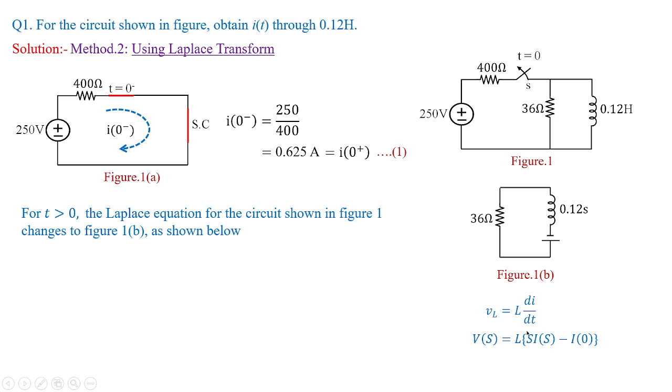We have Ldi/dt so it becomes LsI(s) minus the initial current stored. Here we have 0.625 amps so that you need to keep in mind. Overall, the voltage across inductor is based upon this formula, that is V(s) is equal to LsI(s) minus LI(0). I have substituted the value of L over here and the value of I(0) also over here and this we are taking as equation 2. We are going to apply KVL to Figure 1b in this direction.